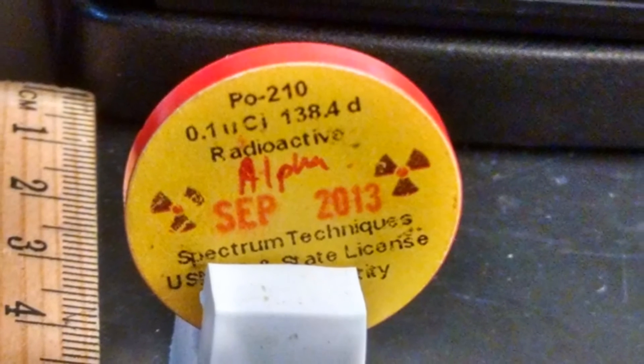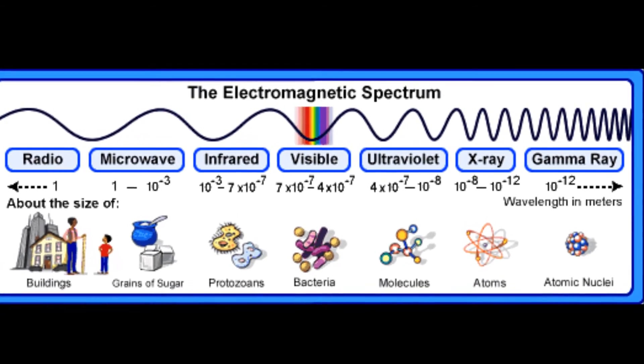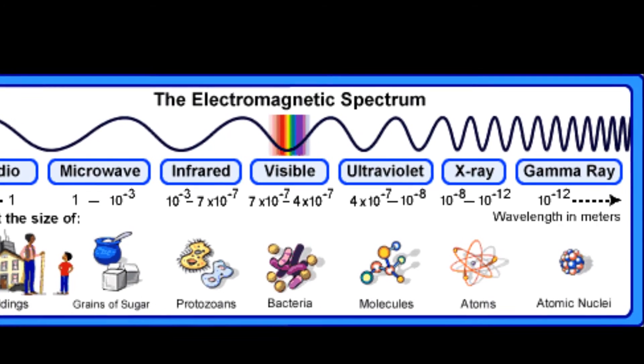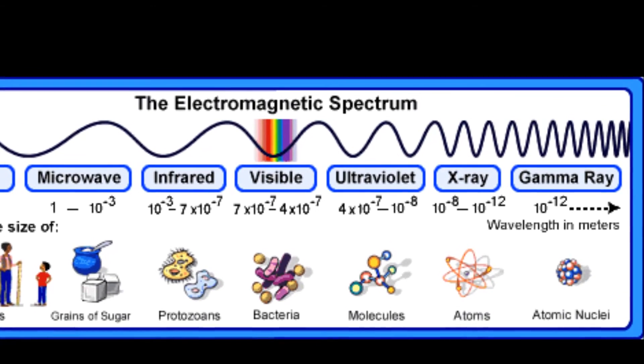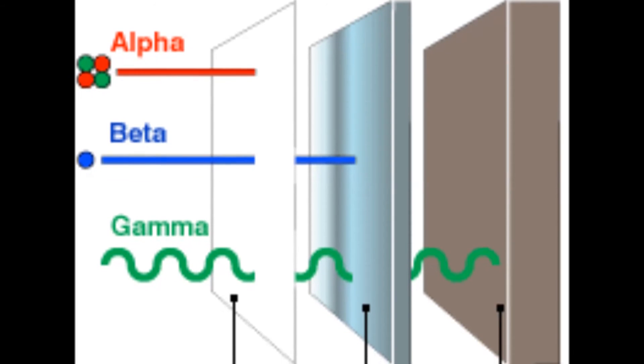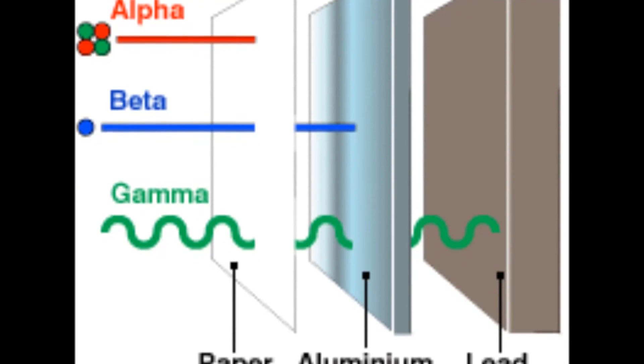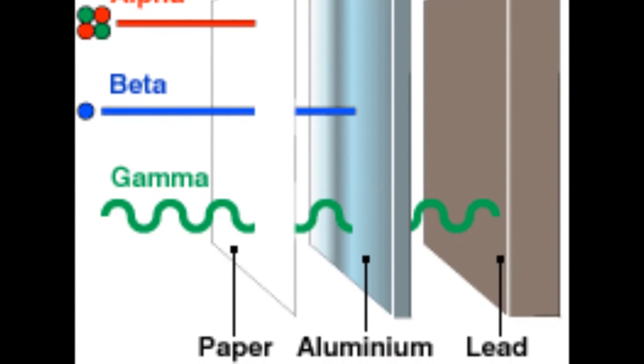This is because gamma radiation is a photon of electromagnetic energy that has no mass or charge and doesn't interact with matter as much as ionizing particles like alpha and beta. Since gamma radiation loses energy slowly, gamma rays are able to travel through great distances.